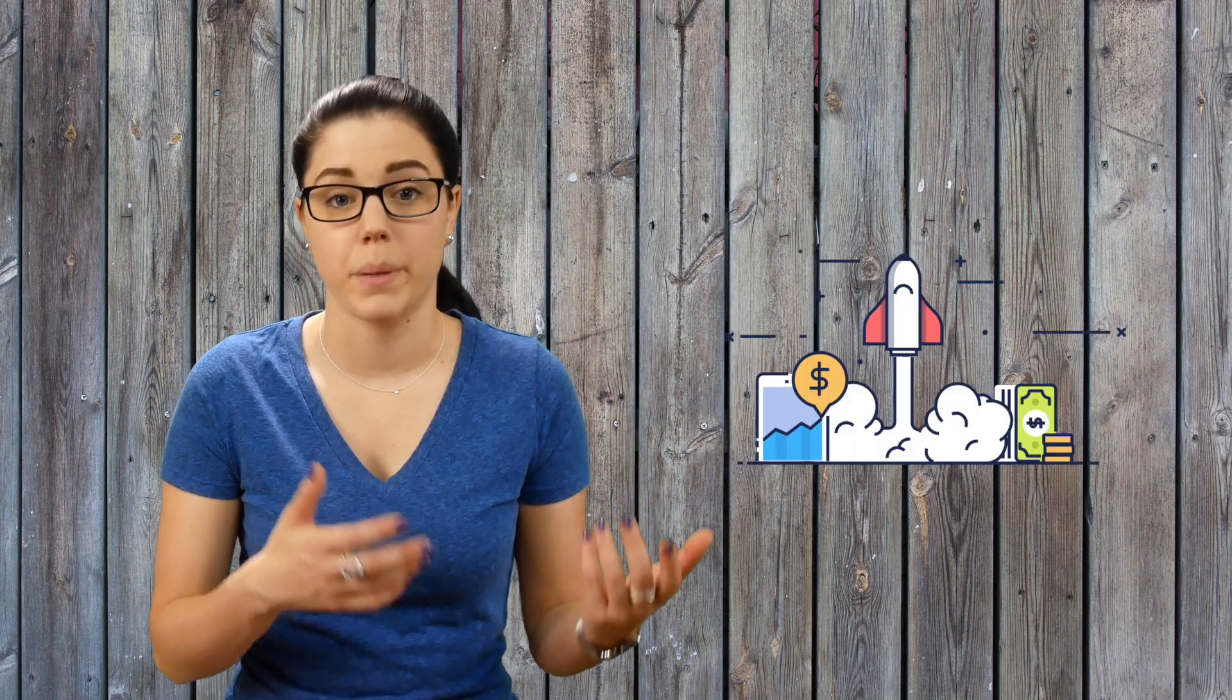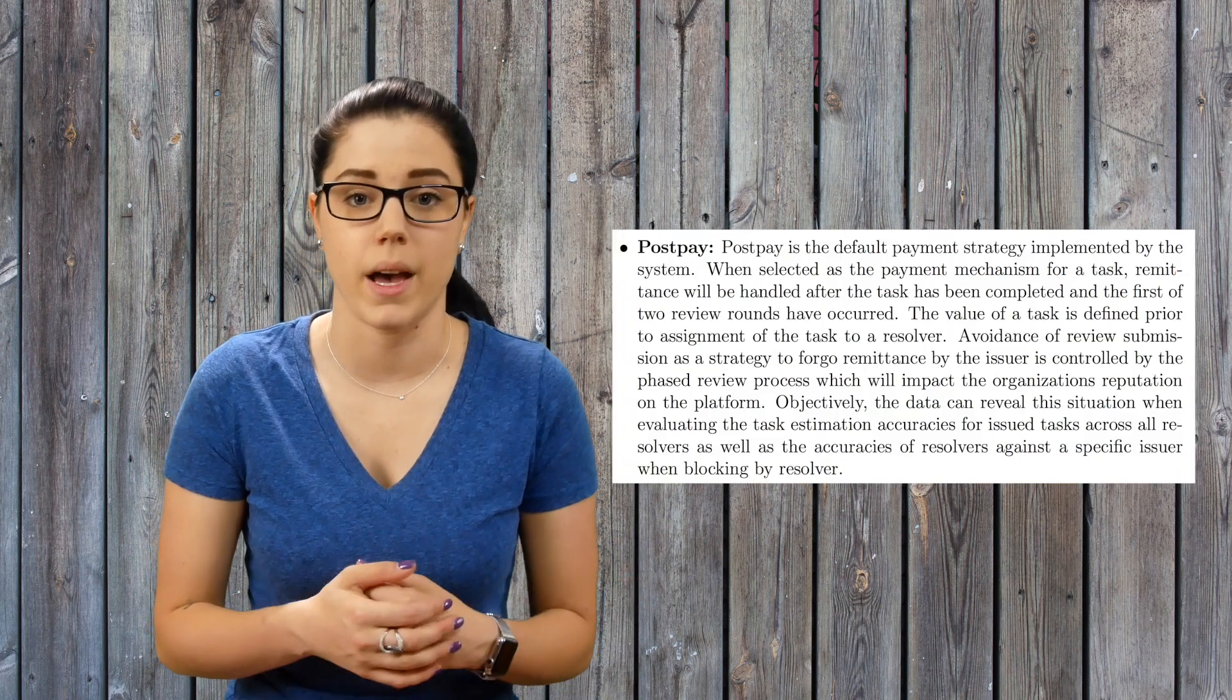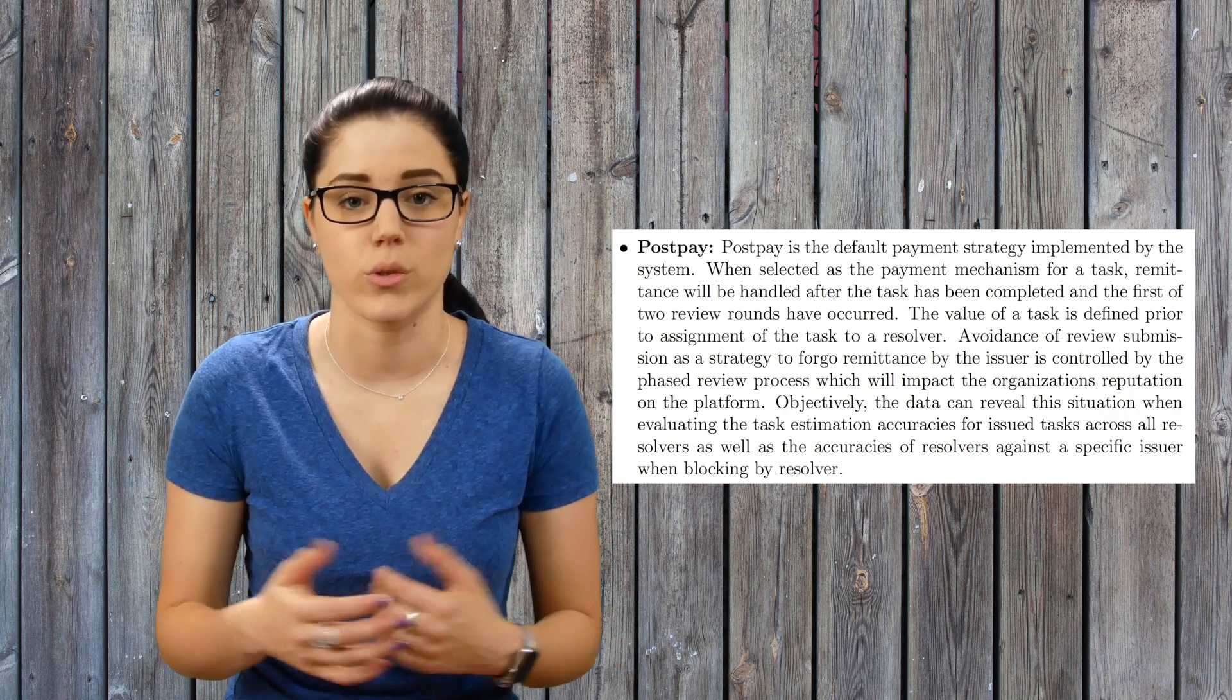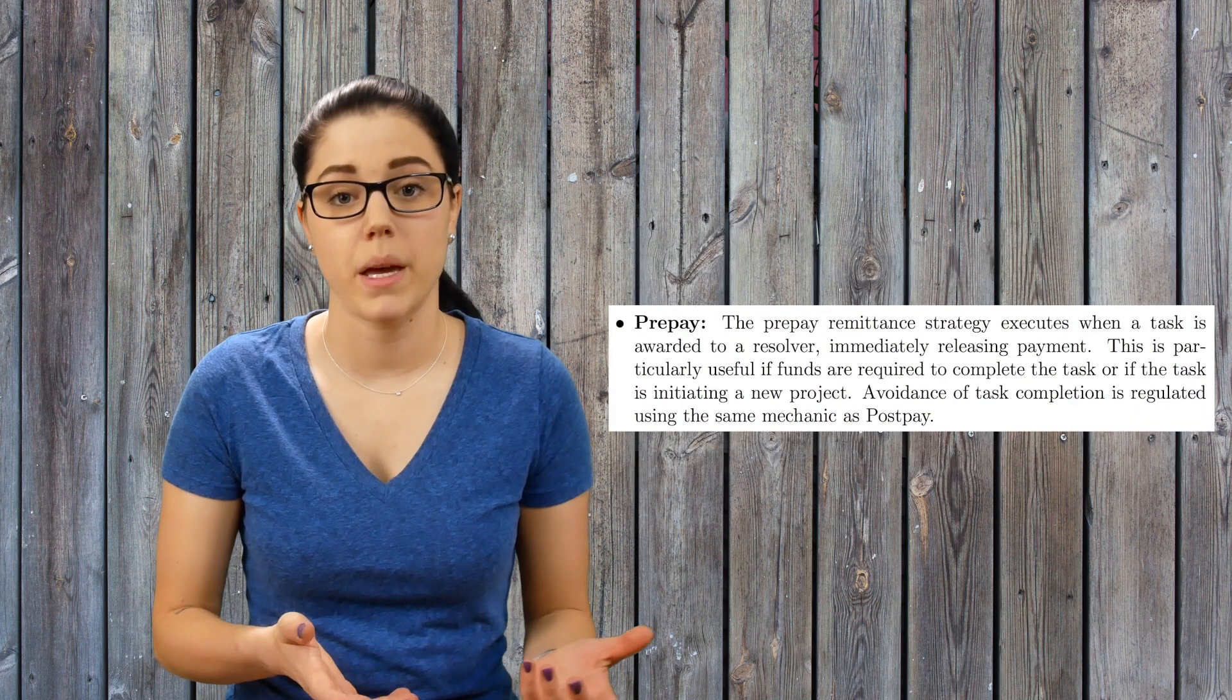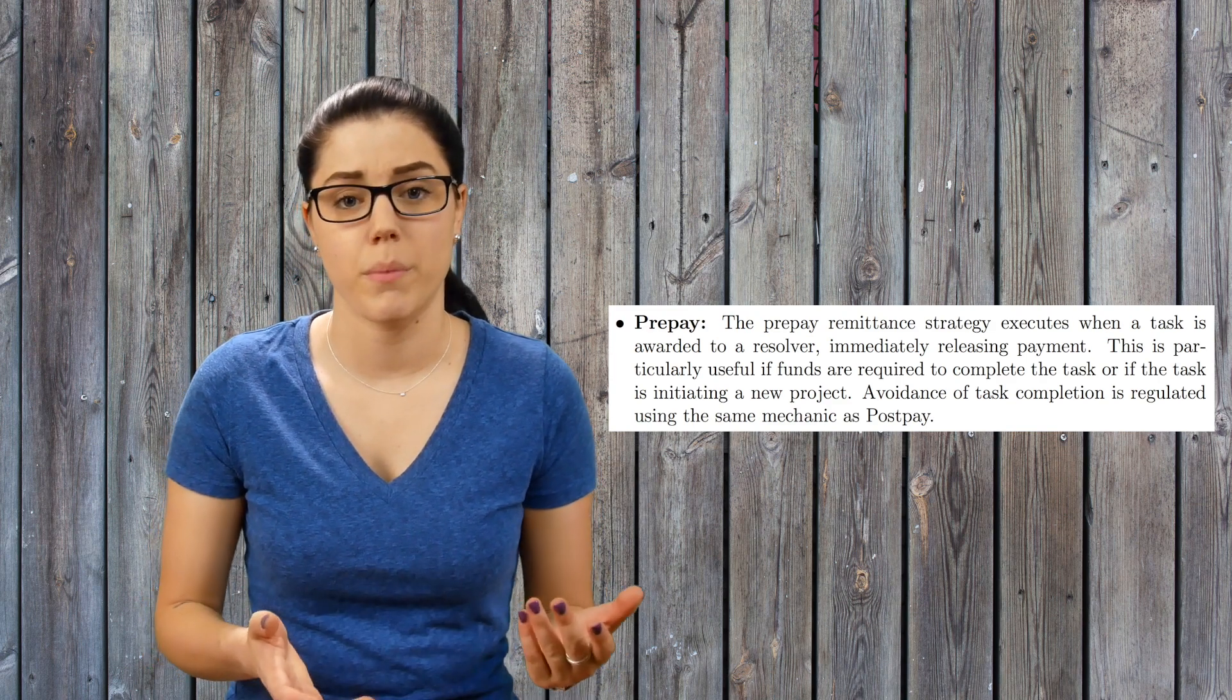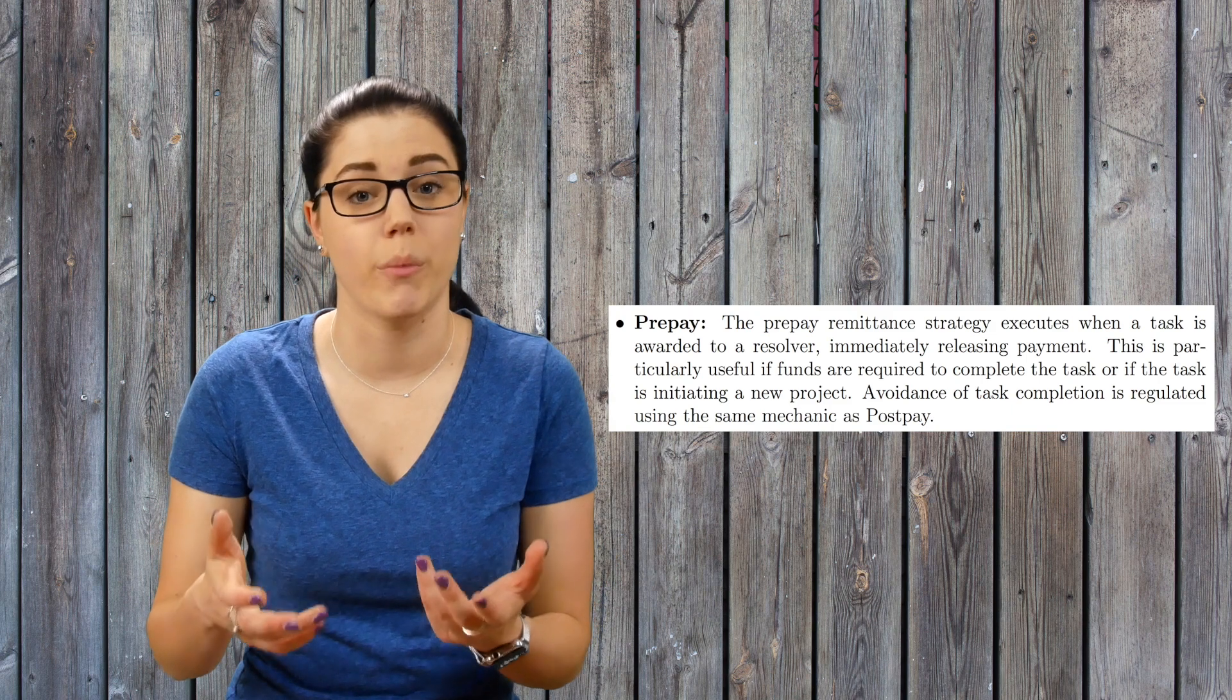Remittance. This is defined as a peer-to-peer transfer of funds across borders. Moonlight will support different types of payments. The first one would be post-pay and it's the payment type that allows the organization to provide payment for the task after it's completed. Pre-pay is the payment type that pays the provider as soon as he is selected for the task. This is a good method of payment for those tasks that may have associated upfront costs.